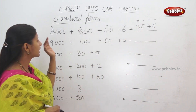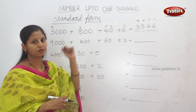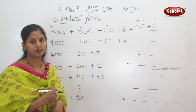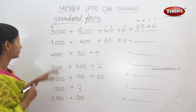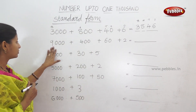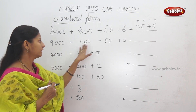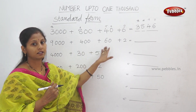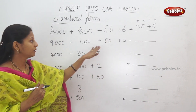This is expanded form. Standard form — convert. Here is example: 9000 plus 400 plus 60 plus 2.